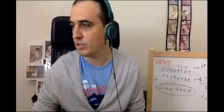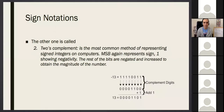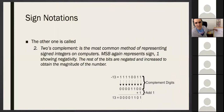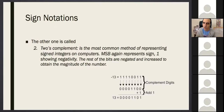A student asks: what happened to the final carry? Nothing happened to it in this mathematical example — it was lost because we don't have that extra digit. However, in the microprocessor there is a carry bit where that information is saved, because in certain situations we will need it. In this mathematical question we simply don't have the extra width, so it's just zero.